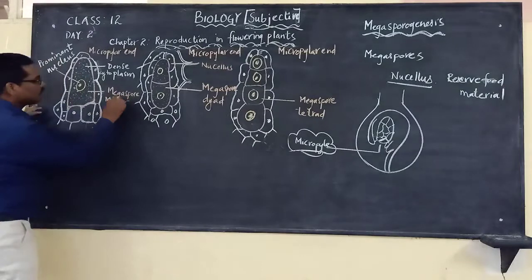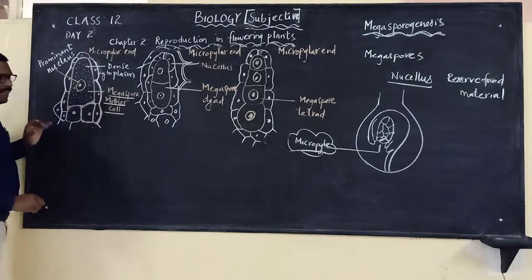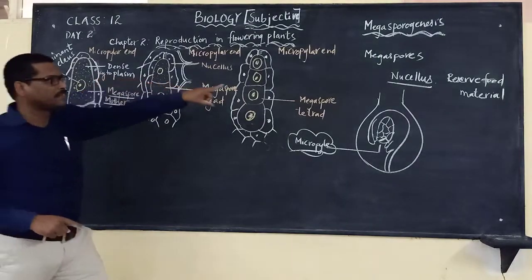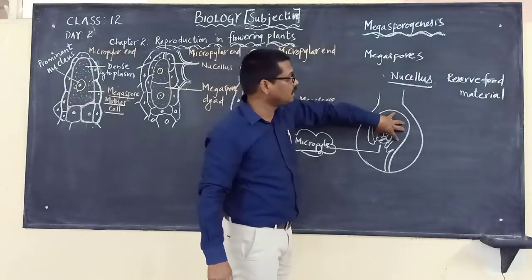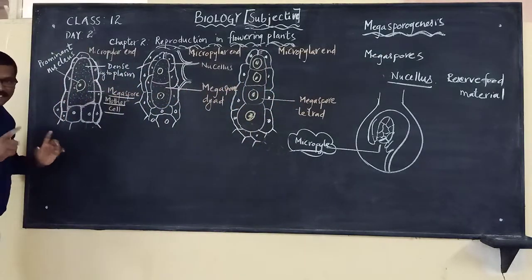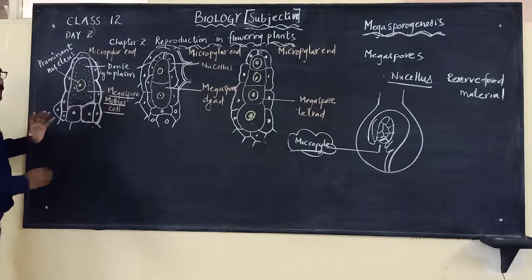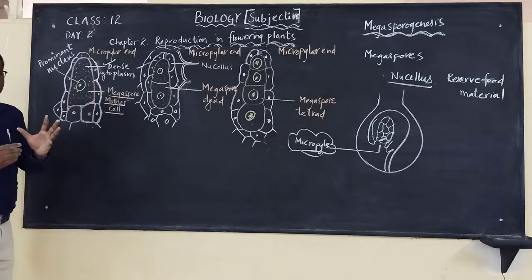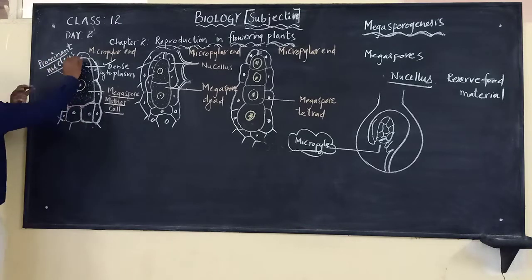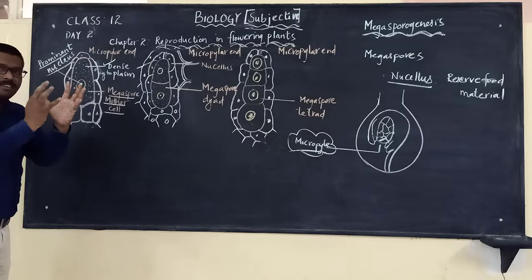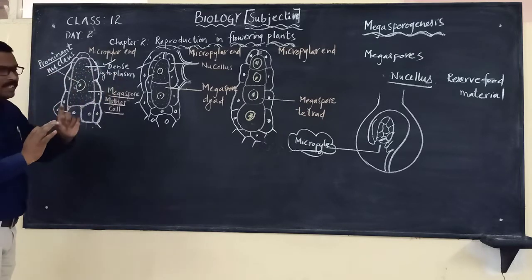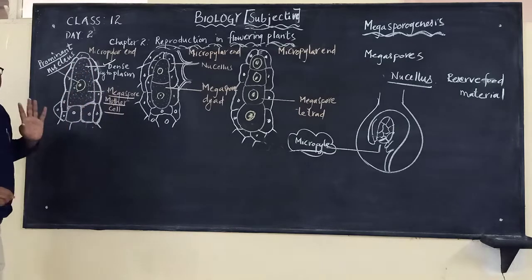That one single cell is called the megaspore mother cell. This megaspore mother cell is nothing but one of the cells of the nucellus cells present in the ovule. It will be containing dense cytoplasm — very thick cytoplasm — and a clear and prominent nucleus. These are the two characteristics to identify the megaspore mother cell.